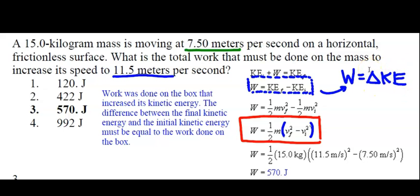We started off our lesson with KE equals one half m v final squared minus v initial squared. So we derived this formula already in the red box. Just applying the information given in the problem gives us this. One half times 15 kilograms times 11.5 meters per second squared minus 7.5 meters per second squared. When you do the math, you get 570 joules.